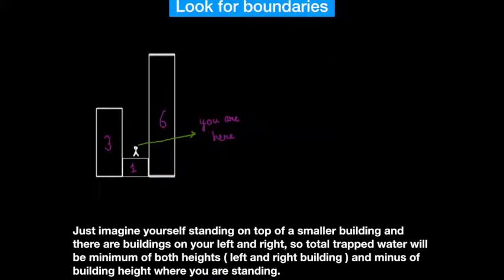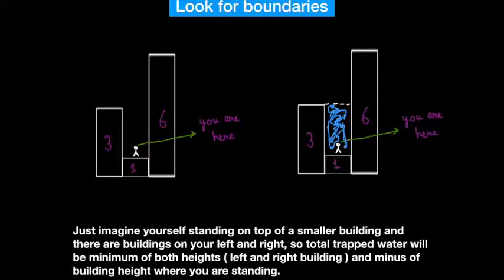So how to solve this problem? Imagine yourself standing on top of a smaller building. You look to your left and observe a building with height 3, and you look to your right and observe a building with height 6. The total trapped water at that position is the minimum of both heights minus the height of the building where you are standing. For this case it will be 2.